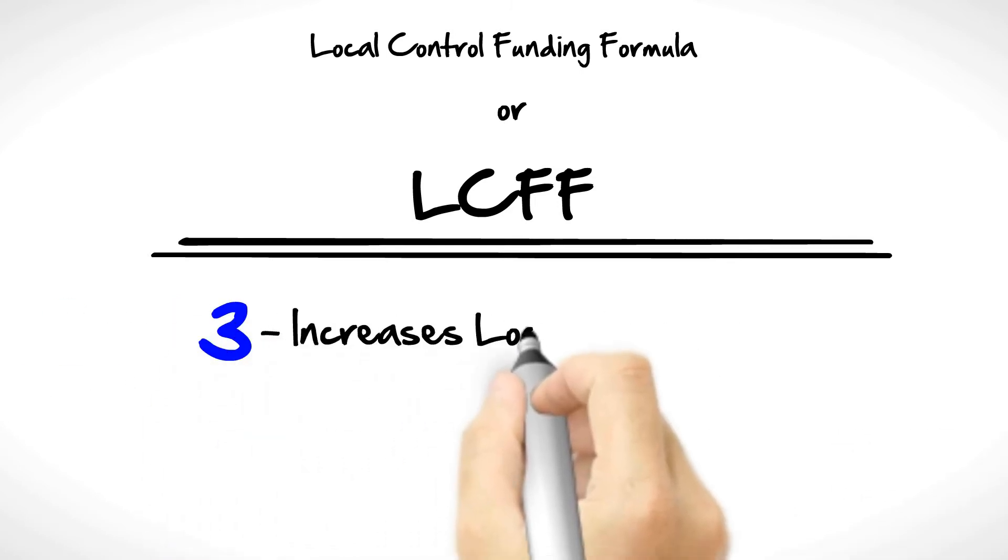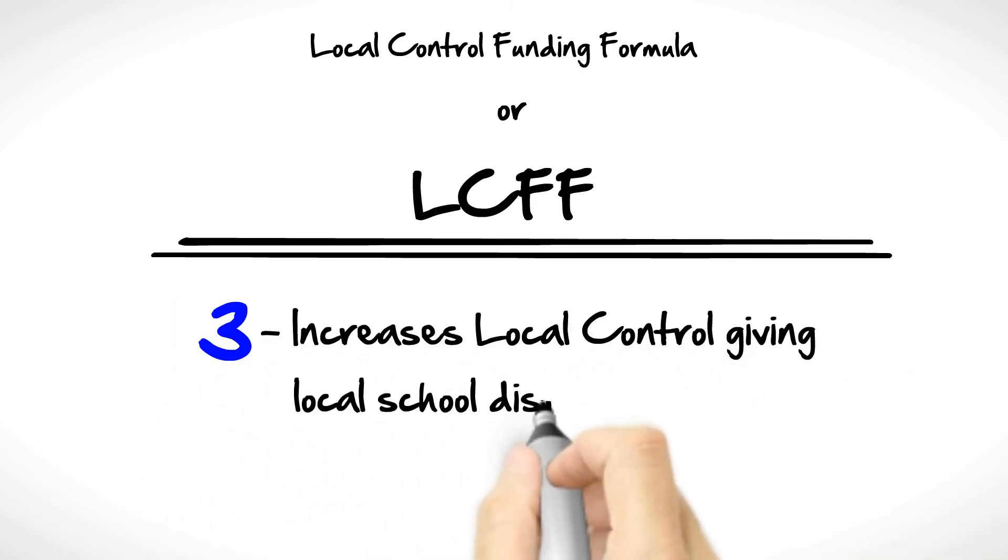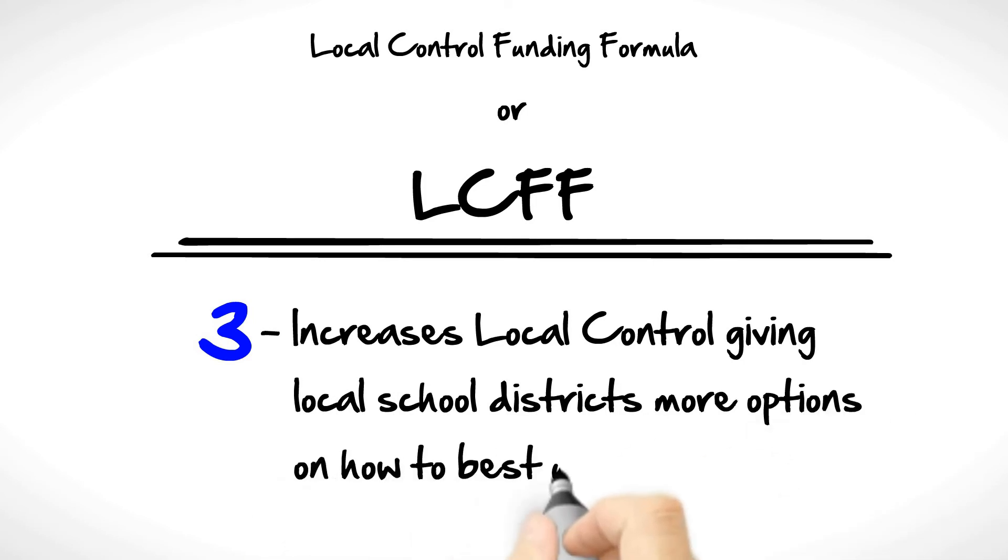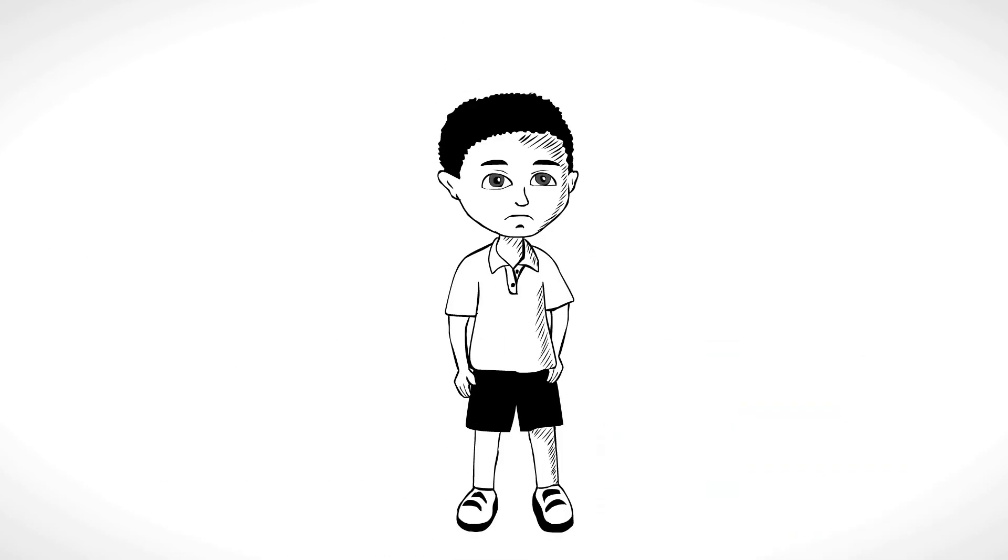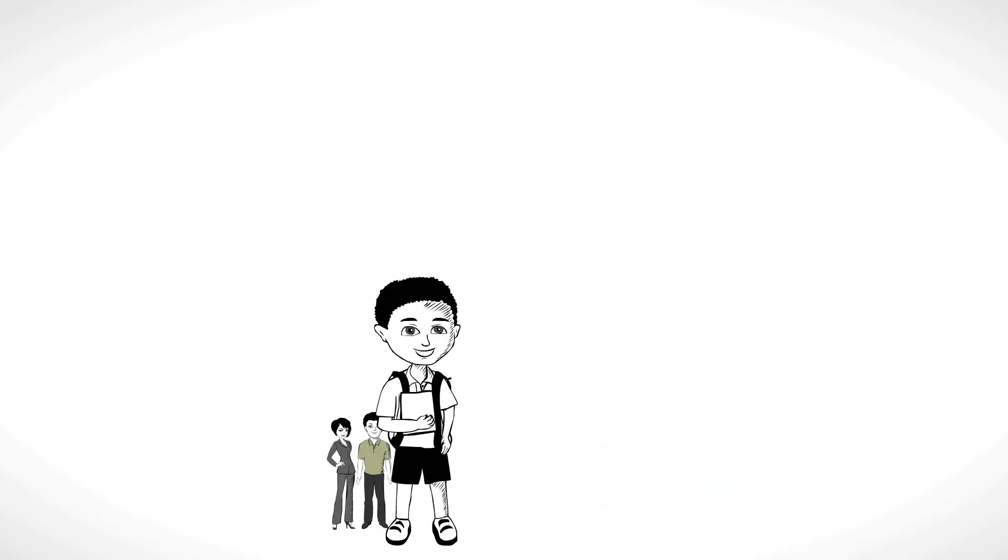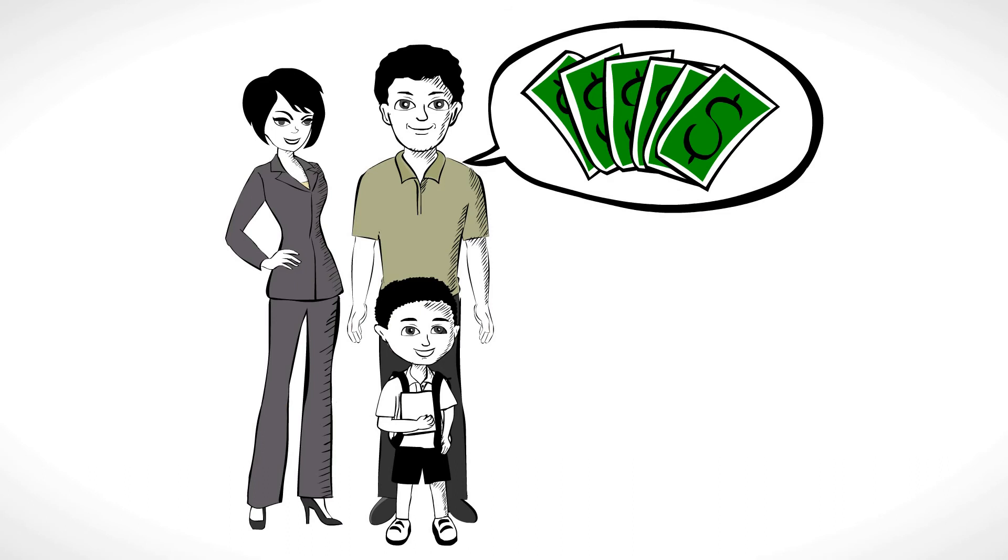Three: Increases local control, giving local school districts more options on how to best use funds. Fair Share for Kids supports this plan so long as low-income students receive the support they need and parents have a voice on how monies are spent.